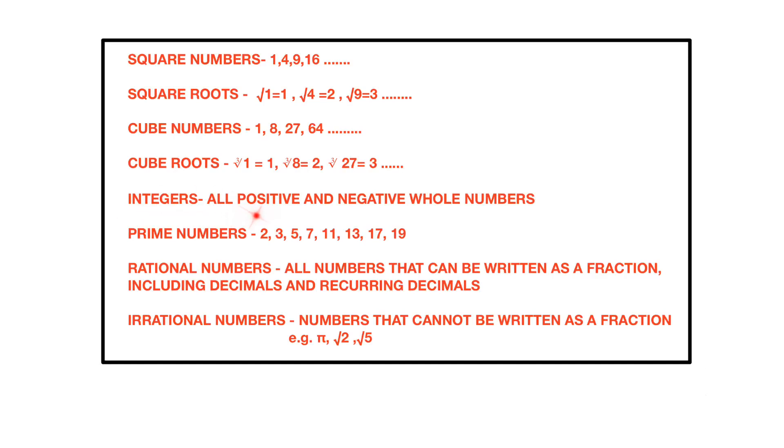Integers are all positive and negative whole numbers. Prime numbers are numbers that are only in 1 times table and itself. 2 is the only even prime number.